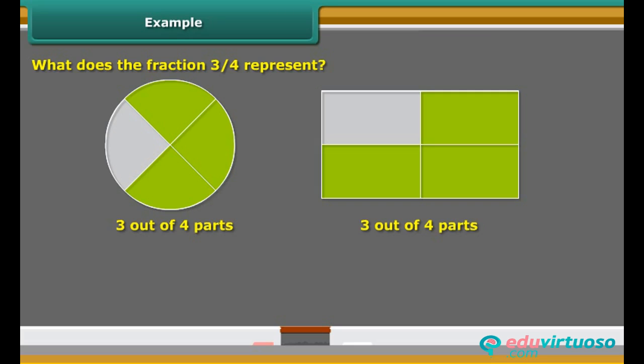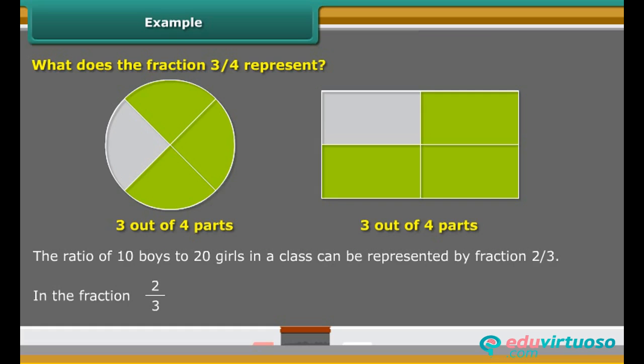The ratio of 10 boys to 20 girls in a class can be represented by fraction 2 upon 3. In the fraction 2 upon 3, number 2 is called the numerator of the fraction, and number 3 is called the denominator of the fraction.